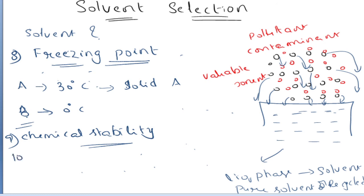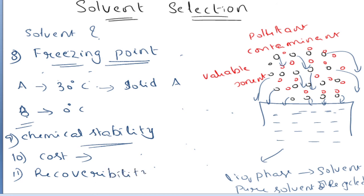The tenth criteria is cost — obviously you should get your solvent at the lowest possible rate, at a low cost to the maximum possible. The eleventh criteria is recoverability — that means how easily you can recover your solvent. If you want to reuse the solvent for further separation, you have to recover or recycle it, so how easily you can recover the solvent also plays an important role in choosing a solvent for this absorption operation.